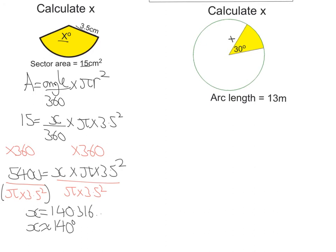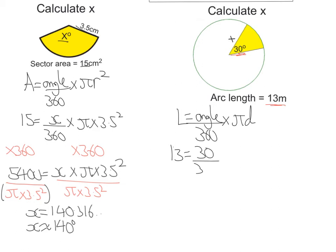Let's look at the second example. This time we're given an arc length and need to work out a radius, so I'm going to use the arc length formula: L equals angle over 360 times pi D. The arc length is 13, the angle is 30, so: 13 equals 30 over 360 times pi. The radius is x, so D must be two times x, giving times 2x.